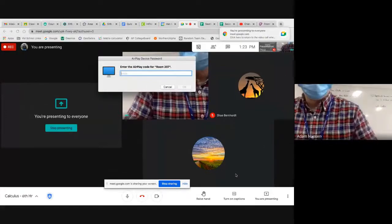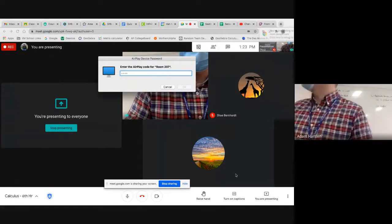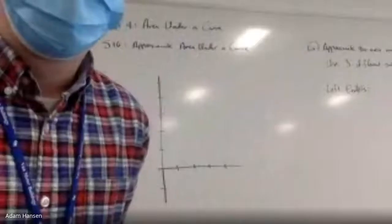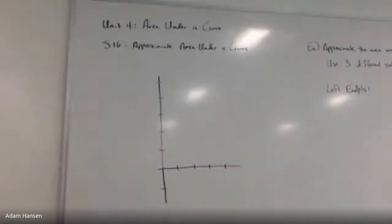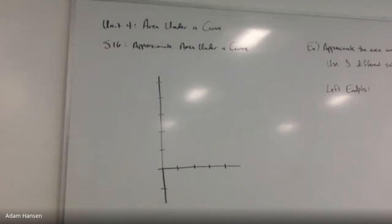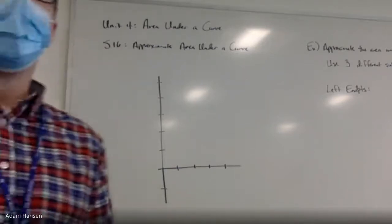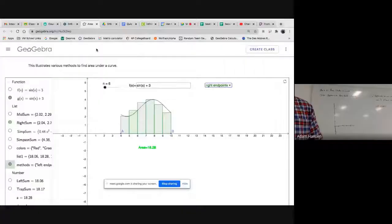Trapezoids, midpoints — we can use those shapes that we can take the area of to approximate the area under a curve. Here is our scenario. I've graphed the function f(x) = sin(x) + 3 on the interval from 4 to 10, and I want to approximate the area under that curve — from the curve down to the x-axis.